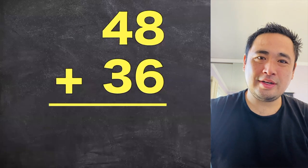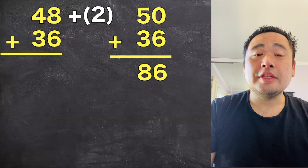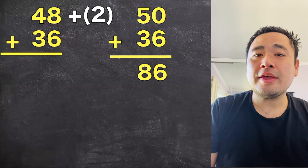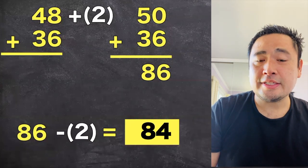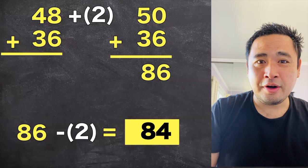Now try this one. Did you add 2 to make 50? Add that to the 36, get 86, and subtract 2 back to get 84. Good job!